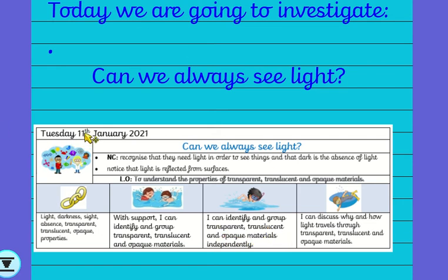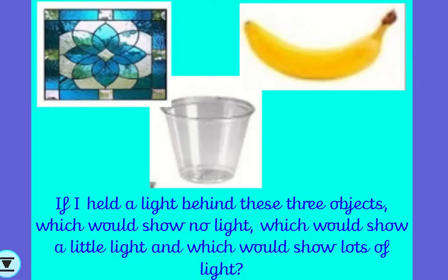And there they are. Mrs Edwards has just noticed that it says the 11th and not the 12th on the success criteria. So I want you to imagine you've got these three objects. And if I held a light behind these three objects, which would show no light through? Which would show a little bit of light through? And which would show lots of light through?